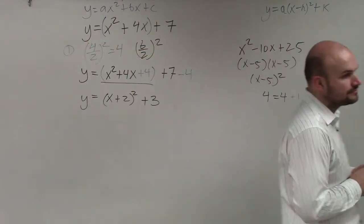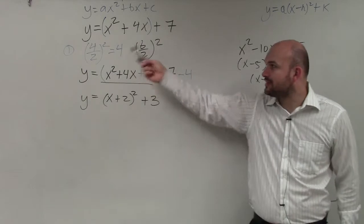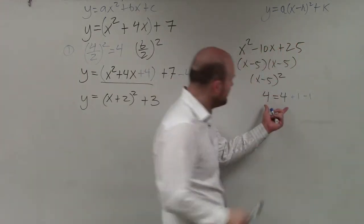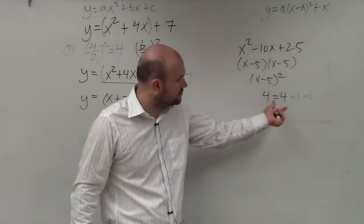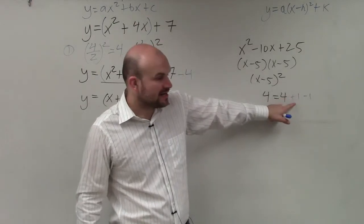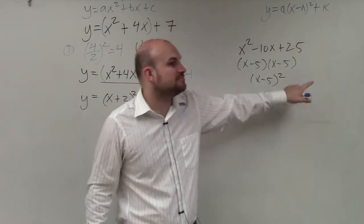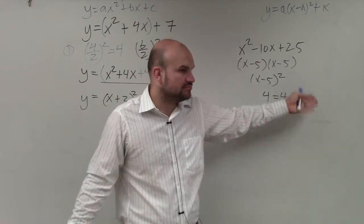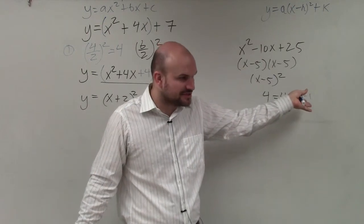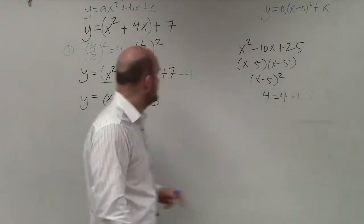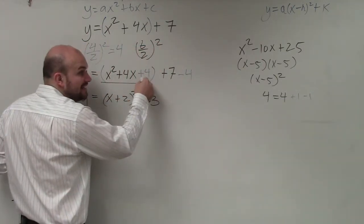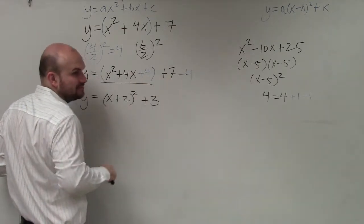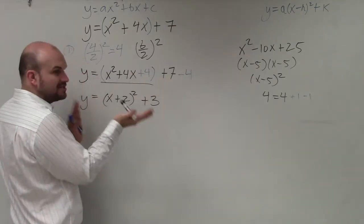The reason I have to subtract it outside is because of equation balance. If you have an equation — 4 equals 4 — and you add one on the right side, you have to subtract one on the right side. You can't add one on one side and expect the equation to still be equal. So if I'm adding 4 inside the parentheses, I have to subtract 4 as well to keep the equation balanced.